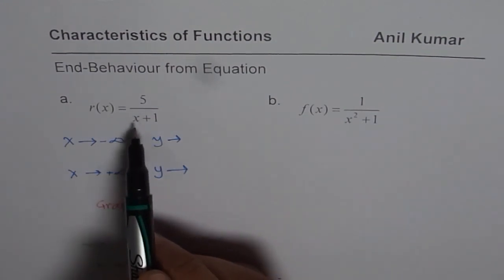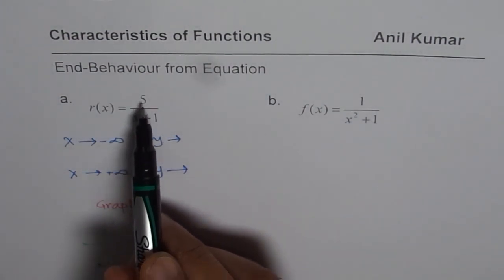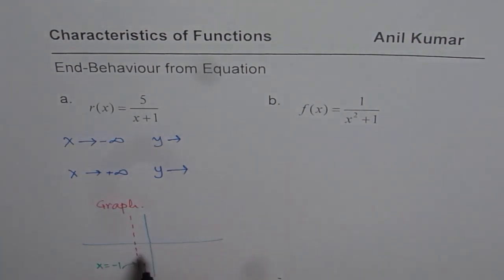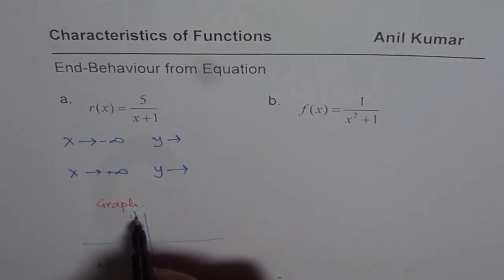So if I write x equals to 0, what do I get? For 0, we get 5 over 1, which is positive 5. So that means this half on the right side is the positive half of this reciprocal function.